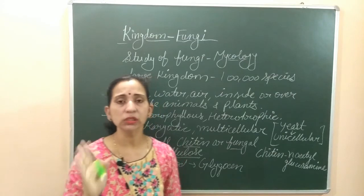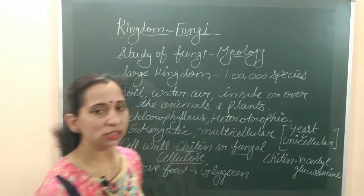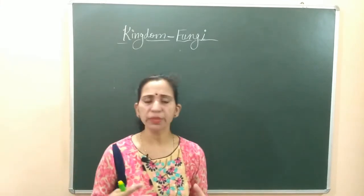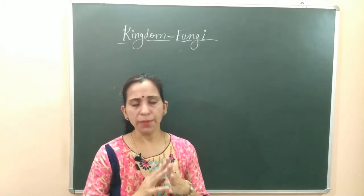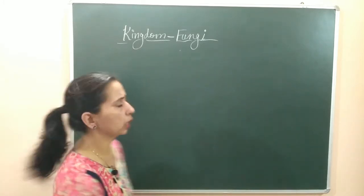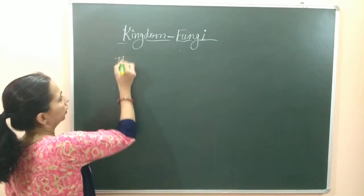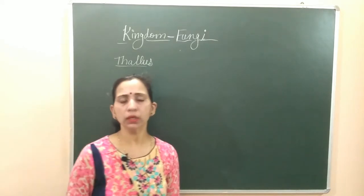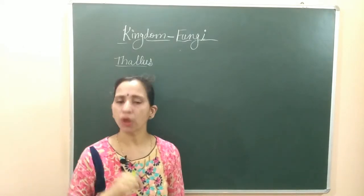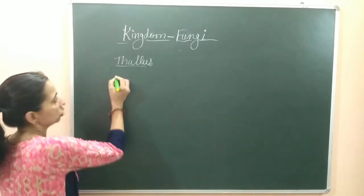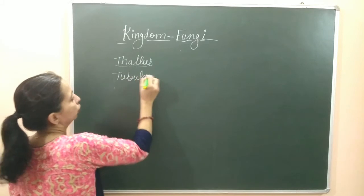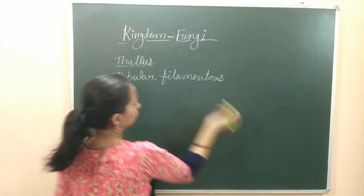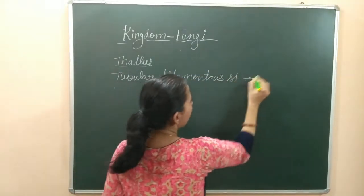Now let's discuss the general structure of the fungi. Fungi have a thallus-like structure, meaning they do not have differentiated body parts. In the case of multicellular fungi, some tubular filamentous structures are found. They are formed of tubular filamentous structures.